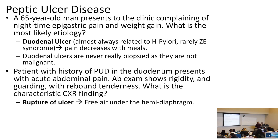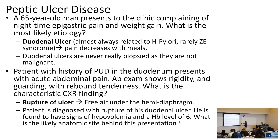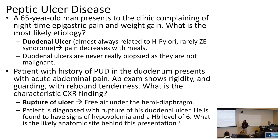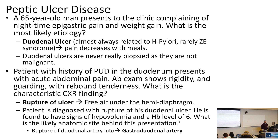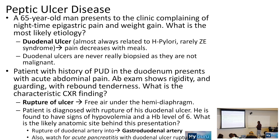The patient is diagnosed with rupture of the duodenal ulcer and is found to have signs of hypovolemia and a hemoglobin level of 6 — very low. Duodenal ulcers rupture into the gastroduodenal artery, whereas gastric ulcers rupture into the left gastric artery. Also watch out for acute pancreatitis as a complication of duodenal ulcer rupture.